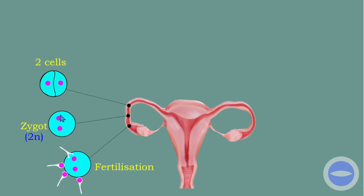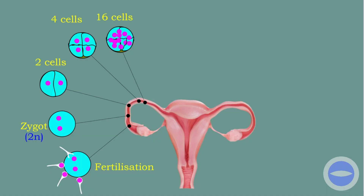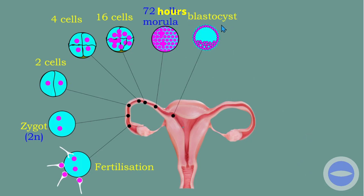When the zygote undergoes mitosis, we have two cells, then those two cells also undergo mitosis giving four cells. This process of mitosis continues regularly until we have something called a morula, which forms about three days after fertilization. The morula also undergoes mitosis and we end up with a blastocyst — another name for blastocyst is a ball of cells.